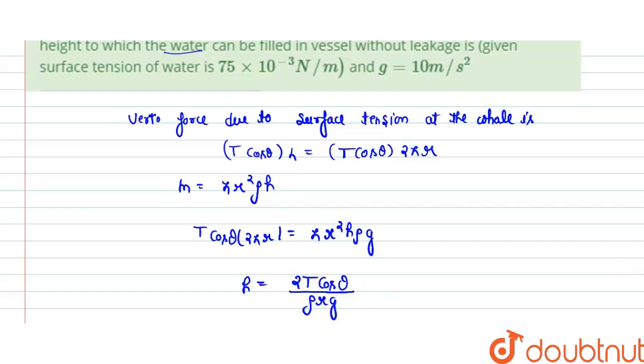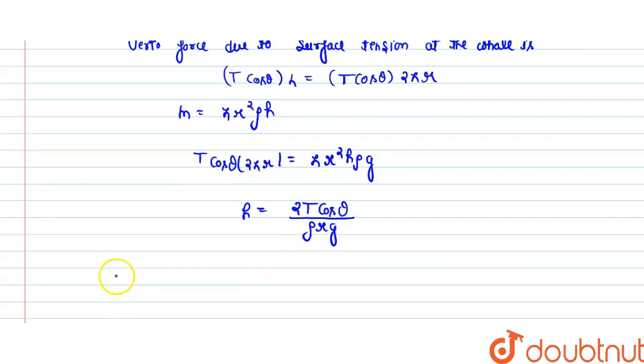So h is maximum when cos theta is 1. We write this condition: h is maximum when cos theta equals 1.